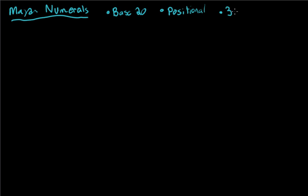Let's talk about the Mayan numerals. Before we get started, a few properties of this number system: it's a base 20 system, it's a positional system which means the order the symbols are written in matters, and it has three symbols.